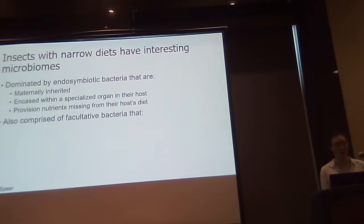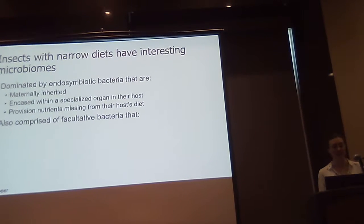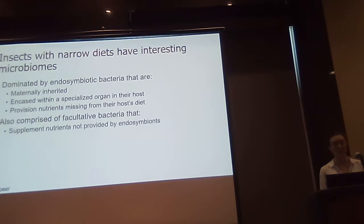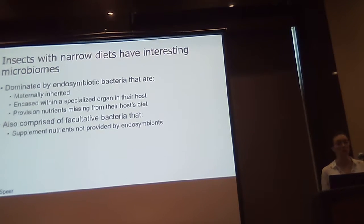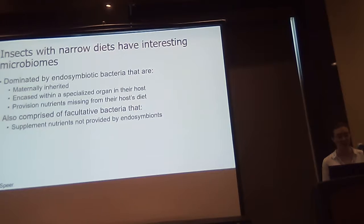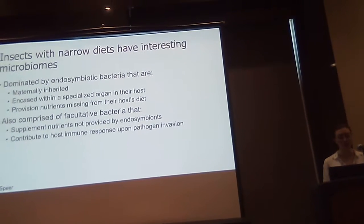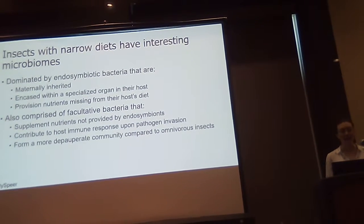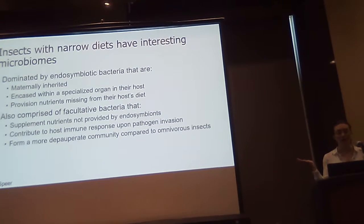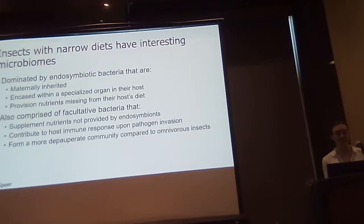The microbiome is also composed of facultative bacteria that are not necessarily maternally inherited. These bacteria supplement nutrients not provided by the endosymbiont, or if the endosymbiont loses functionality through gene loss, facultative bacteria can replace the endosymbiont. Facultative bacteria also contribute to host immune response upon pathogen evasion, and they generally form a more depauperate community compared to omnivorous insects. So insects with narrow diets have depauperate microbiomes compared to insects with diverse diets.